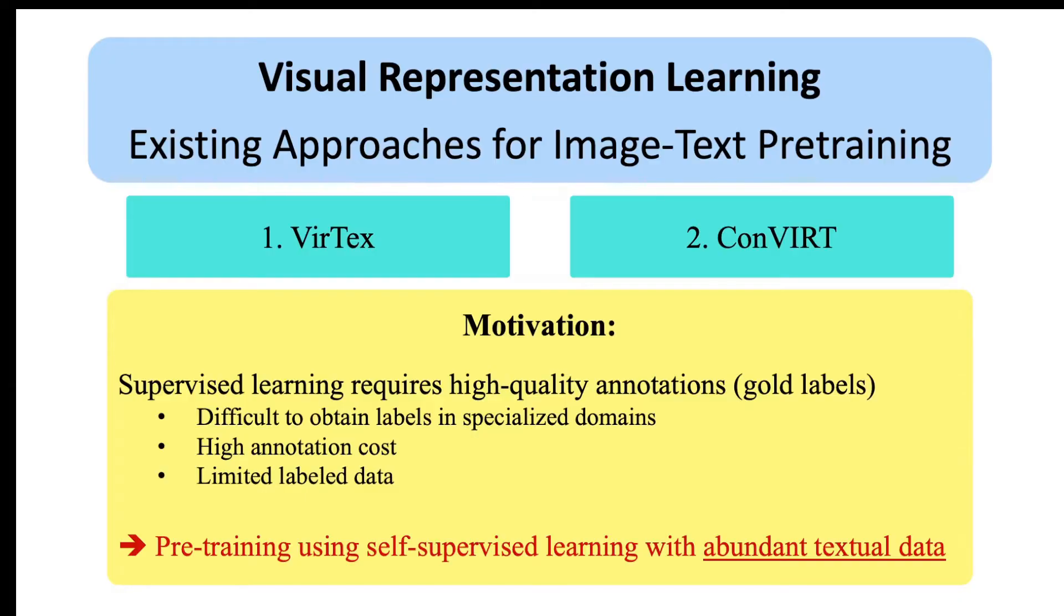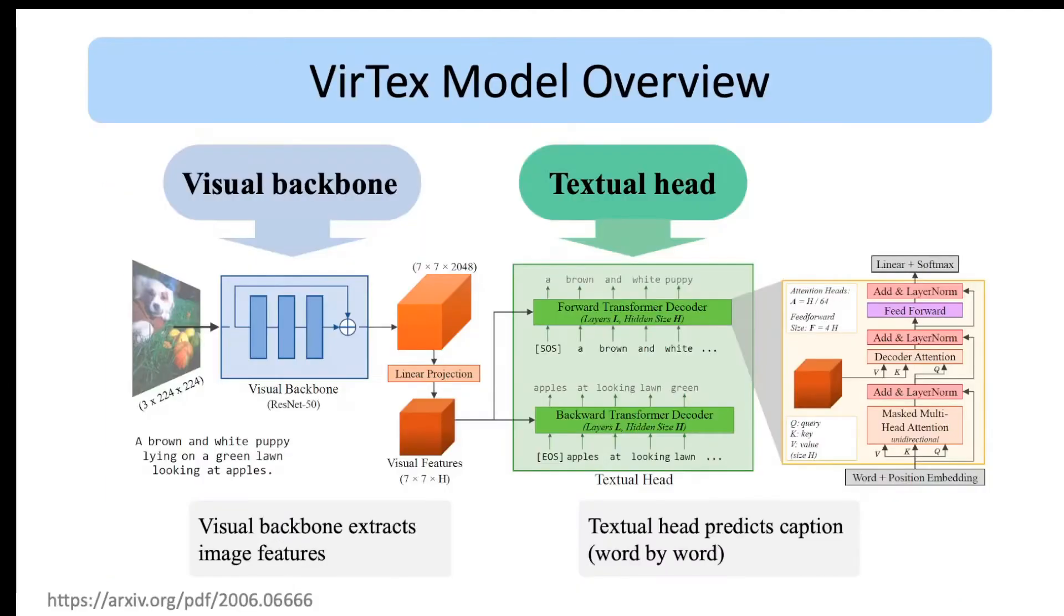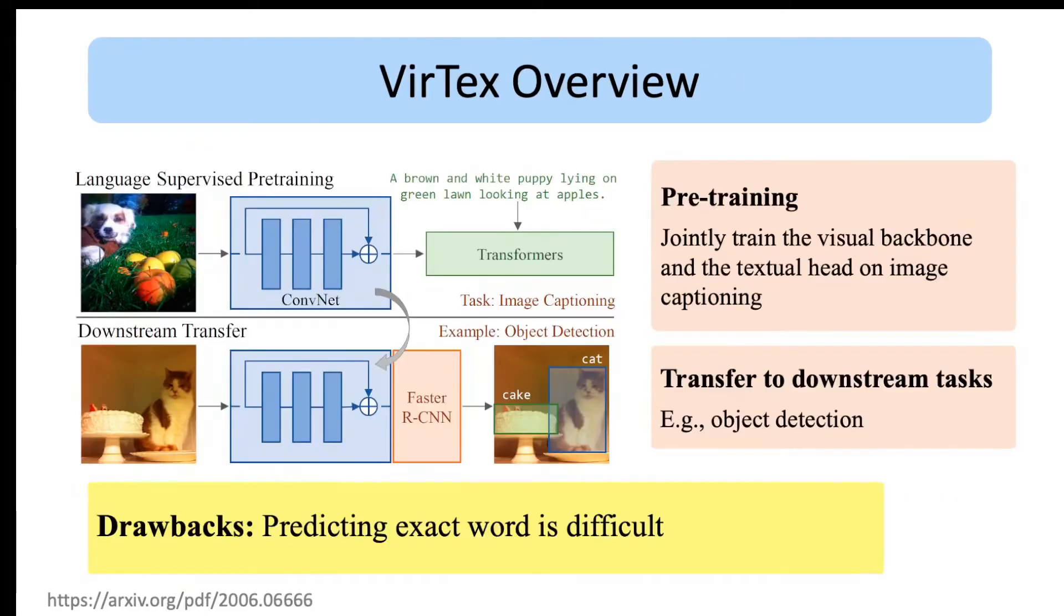So first, let's see these models briefly. The VirTex model is composed of a visual backbone and a textual head. The visual backbone extracts features from the input image, and the textual head receives the features and predicts the caption word by word. After pre-training VirTex, this model can be transferred to downstream tasks. However, the major drawback is that it is difficult to predict the exact caption, since there are various possible captions that can go with an input image.